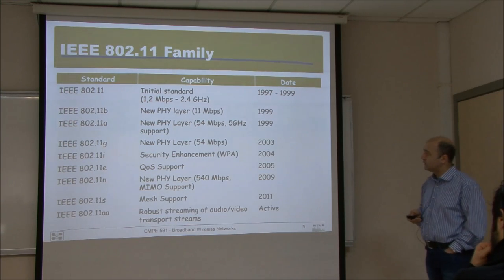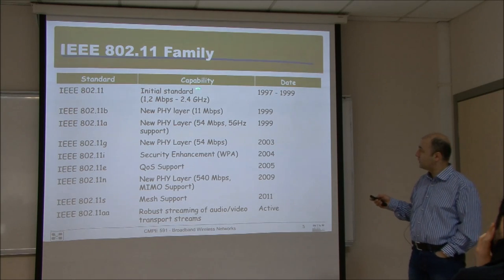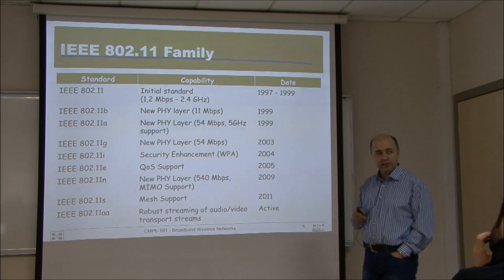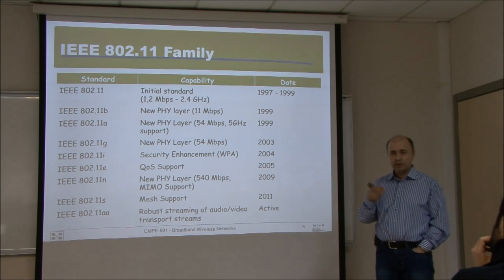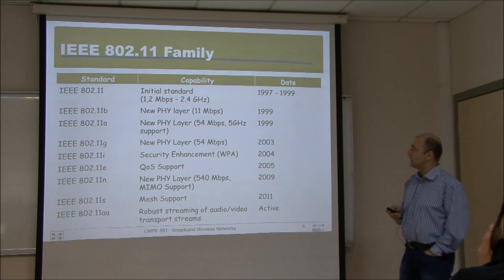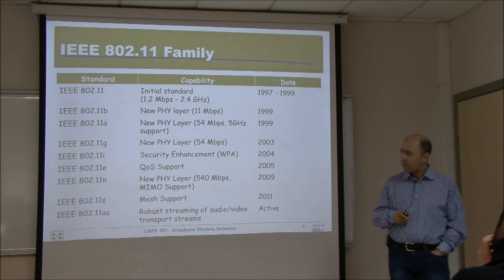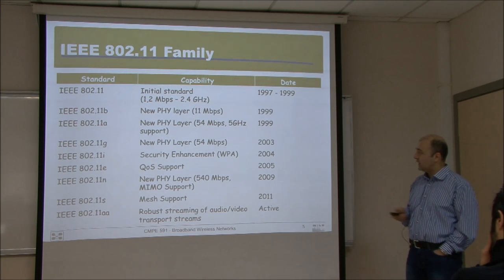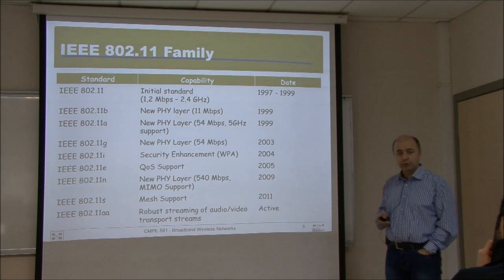The original 802.11 standard came in 1997, working at 1 and 2 Mbps at the 2.4 GHz band. As early as 1998, we started working with Wi-Fi systems in our research lab. Then came 802.11b, which introduced a new physical layer and raised the data rate up to 11 Mbps. But that was not sufficient. Working also at 2.4 GHz, in the 5 GHz band another standard was introduced — 802.11a — which had a different physical layer and worked at speeds up to 54 Mbps.